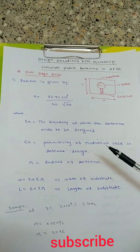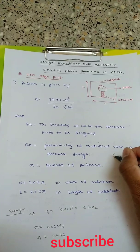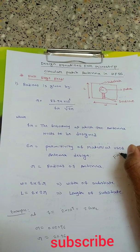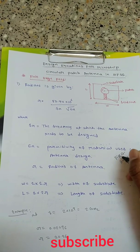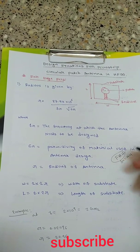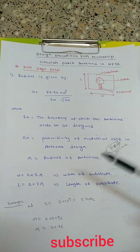Epsilon_r is the permittivity of the material used in the antenna design. If you are using FR4, then its epsilon_r value will be 4.4. FR4, Rogers, epoxy - those are different materials which are available for the patch.